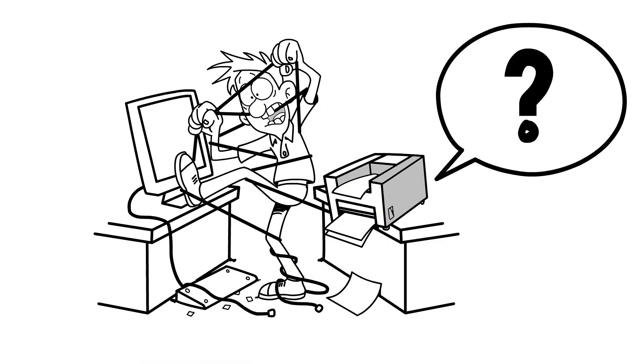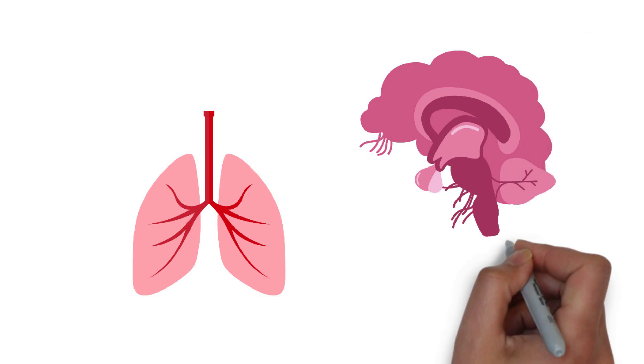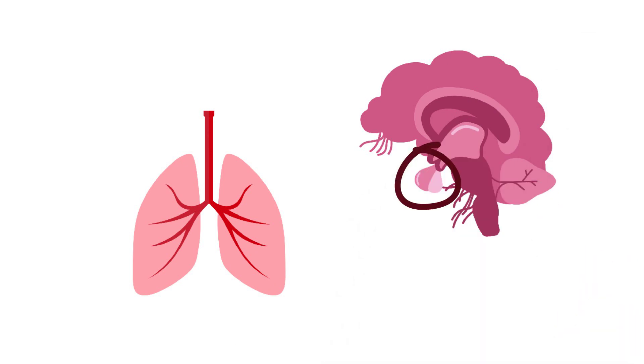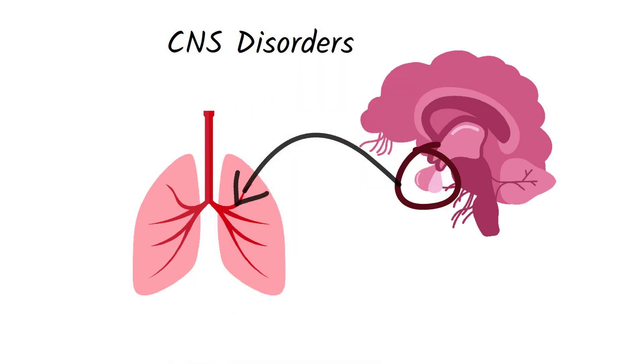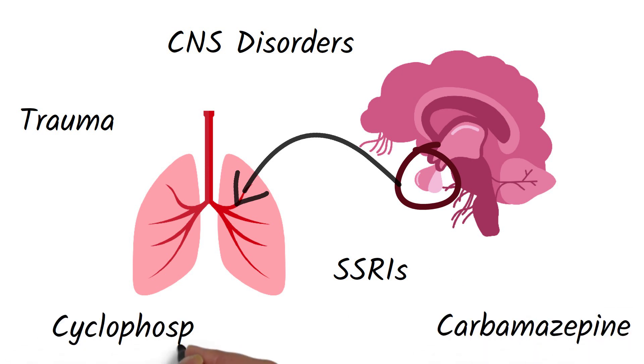So what causes this mess in our body? SIADH happens when ADH is produced outside the pituitary gland in places where it's not supposed to be made, like in the lungs. It can also be caused by CNS disorders, trauma, and by certain drugs or medications like SSRIs, carbamazepine, and cyclophosphamide.